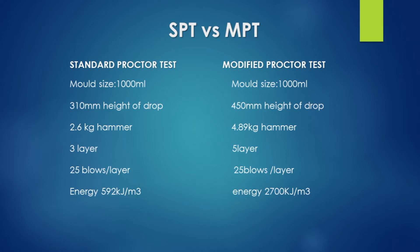What is the difference in the modified process? The height of drop for the standard process is 310 mm; the modified process is 450 mm. The standard process hammer weight is 2.6 kg; the modified process is 4.89 kg. The standard process uses 3 layers; the modified process uses 5 layers.